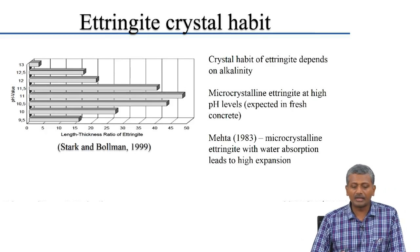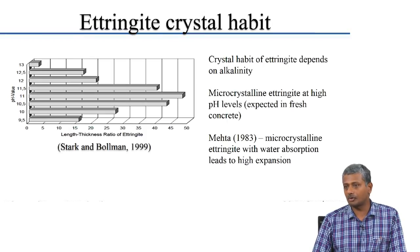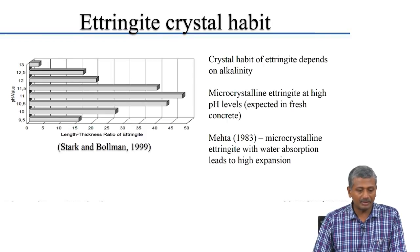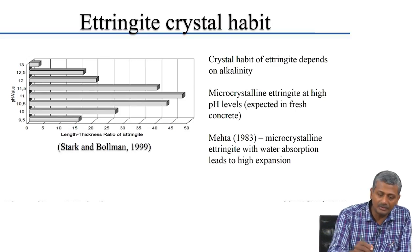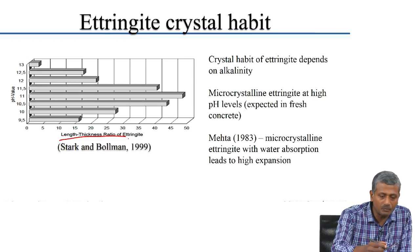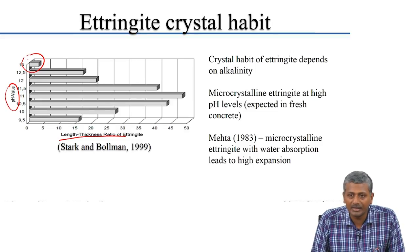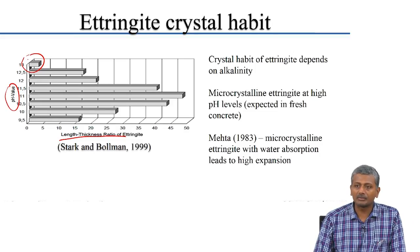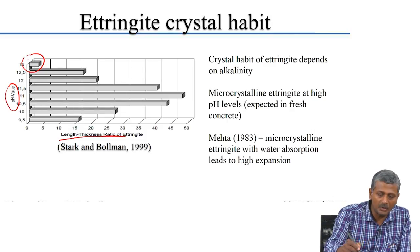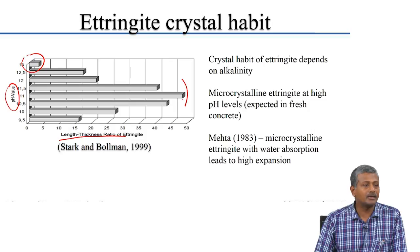The crystalline ettringite that forms is known to form in needle shapes. Ettringite forms like needles with a long dimension, and the length-to-thickness ratio depends on the pH of the surrounding environment. At very high pH levels we form shorter, stubby ettringite crystals, whereas between pH 10 and 12 we form ettringite needles with very high lengths.